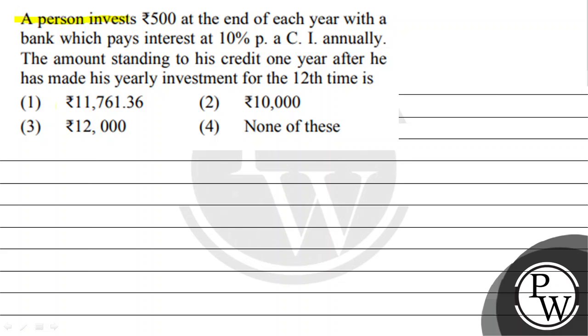The question says: A person invests Rs.500 at the end of each year with a bank which pays interest at 10% per annum compound interest annually.